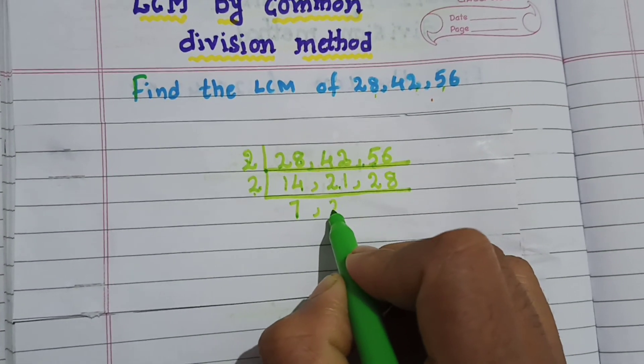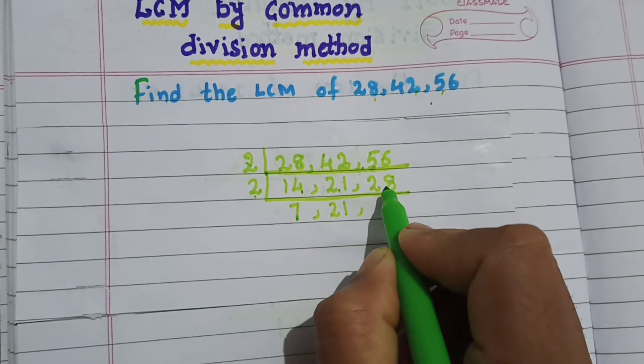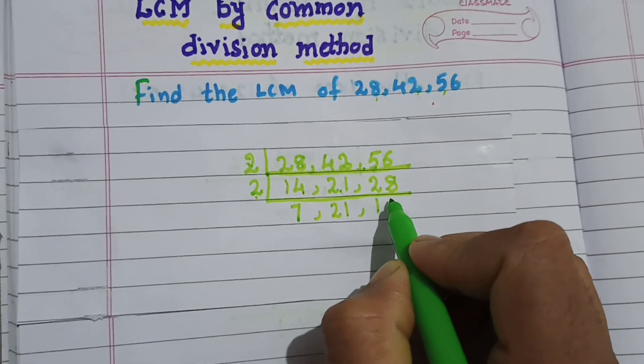So, write as it is. 28 divided by 2 gives me 14.